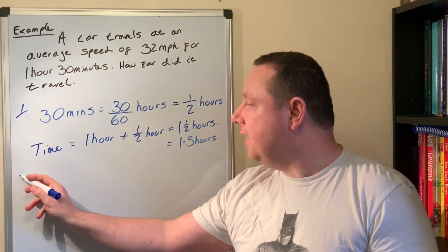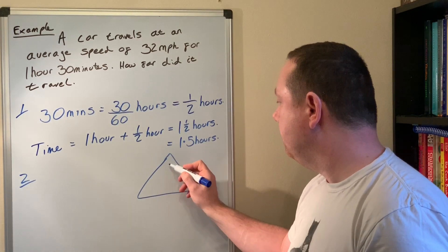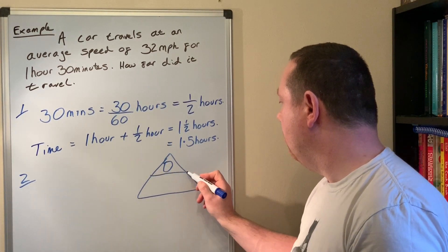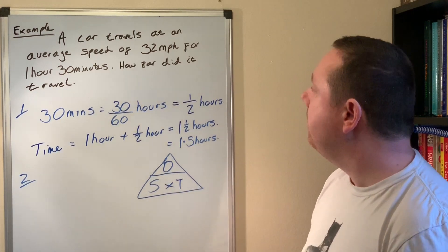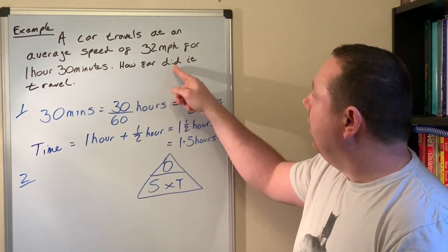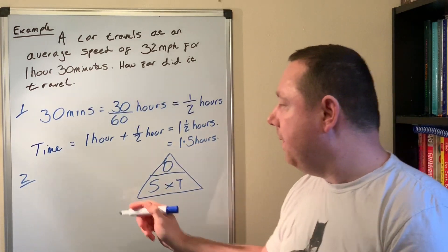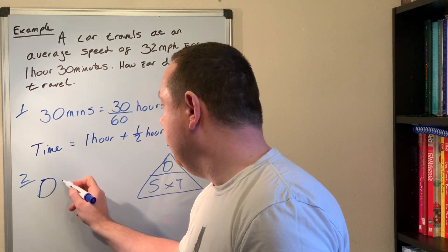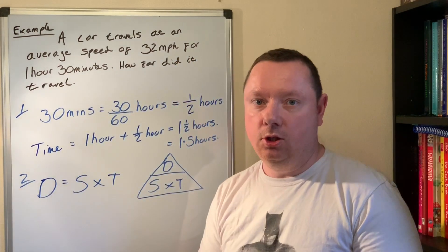So now we'll do step two the same as we always do. We use our distance speed time triangle. Distance over speed times time. How far did it go? Cover the distance, it tells what to do: speed times time. So D equals S times T. Always write down the formula you're going to use.